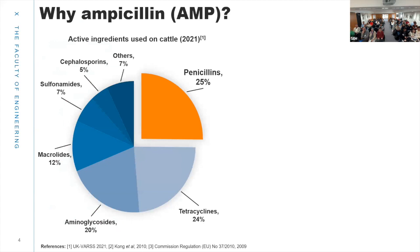Moving on to the target: even though penicillins or beta-lactam class drugs are basically the first antibiotics that have been developed, they are still very widely used in veterinary medicine. You can see in this graph that beta-lactams are actually still the leading choice in veterinary medicine — this is from a recent UK data report. Other antibiotic residues used in veterinary medicine on dairy cows include tetracyclines, aminoglycosides, macrolides, and others.